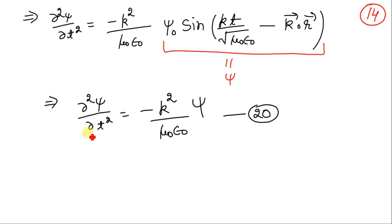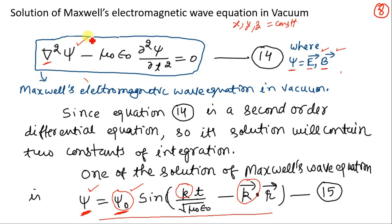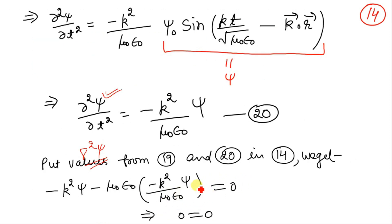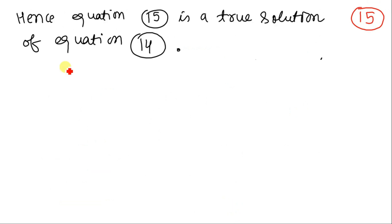Now we have both ∇²ψ (equation 19) and ∂²ψ/∂t² (equation 20). Inserting these into equation 14: the left-hand side becomes −k²ψ, and the right-hand side involves the factor −μ₀ε₀ multiplied by −k²/(μ₀ε₀)ψ, which also gives −k²ψ. So we get 0 = 0, confirming left-hand side equals right-hand side. Hence equation 15 is a true solution of equation 14.